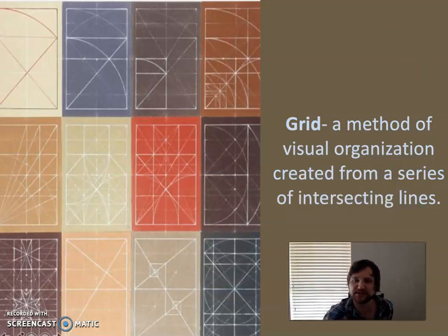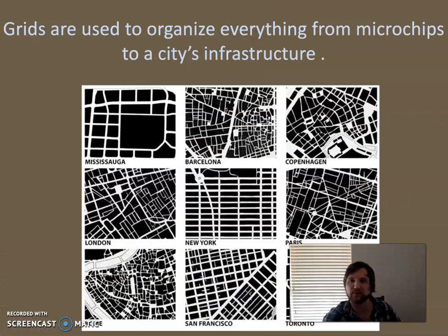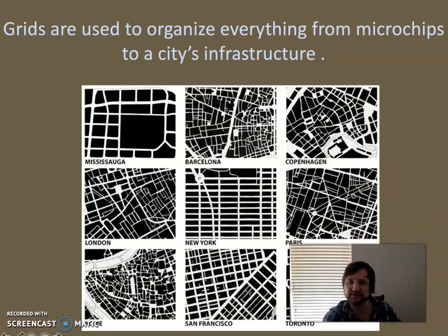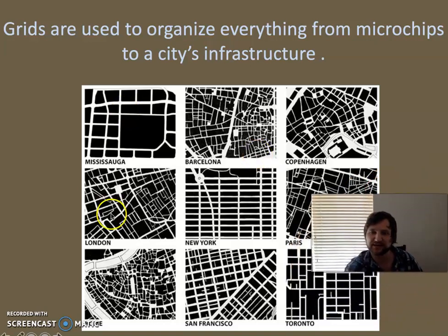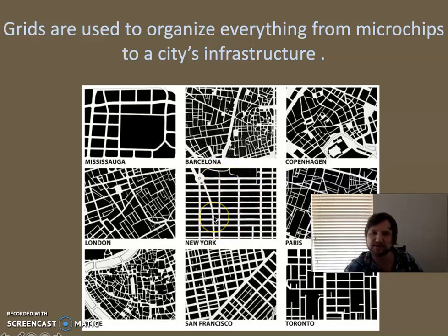The next visual organization idea is grids. A grid is a little different than a pattern because a grid uses intersecting lines to organize visual information, whereas patterns tend to use a repeating shape. If you're engineering or designing a city, you're going to use intersecting lines — the lines would be streets or sidewalks — and you have to organize the city so you can navigate through it. If you're ever in Manhattan, it's just a big grid, and it's very easy to not get lost in New York because of that.